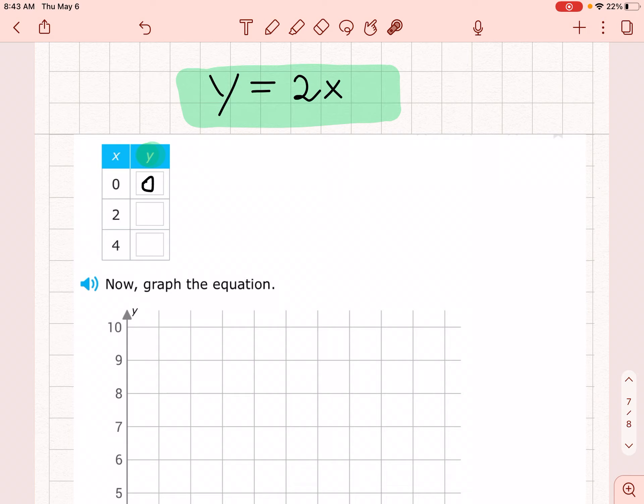All right, next up, when x is 2, y is going to be 2 times 2, which is 4. So when x is 2, y is 4.